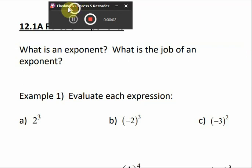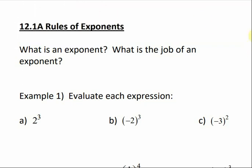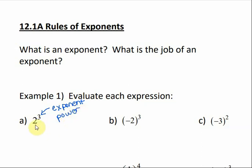12.1a, rules of exponents. What is an exponent? What is the job of an exponent? If we look at an example like this, we have a 2 and then a little 3 raised up. That little number is our exponent, or another name we sometimes use is the power. The big number at the bottom is called the base. The job of an exponent is to tell us how many times we should multiply the base times itself.